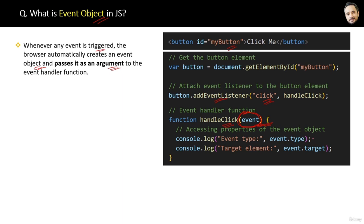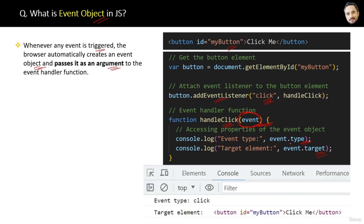If you need this event object, you can put it as a parameter; if you do not need it, simply leave it out. For example, if you want to get some information about the triggered event, you can use it to get the type of the event or the target element on which the event was triggered. In the browser console, the event object gives you the event type as 'click' and the whole target element.